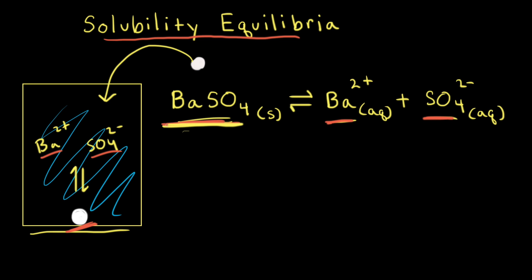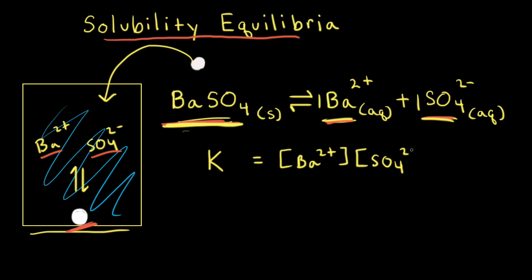The balanced equation shows the dissolution of a salt, barium sulfate. From the balanced equation, we can write an equilibrium constant expression. We write the equilibrium constant K equal to the concentration of barium 2+ raised to the first power times the concentration of sulfate also raised to the first power. Since pure solids are left out of equilibrium constant expressions, we do not include solid barium sulfate. For solubility equilibria, we write Ksp, where sp stands for solubility product. The solubility product constant Ksp has only one value for a given salt at a specific temperature, usually 25 degrees Celsius.